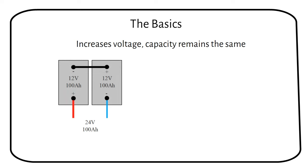If we combine two 12 volt 100 amp hour batteries, we get one 24 volt 100 amp hour battery. Did you see that the voltage doubled and the capacity remained the same?